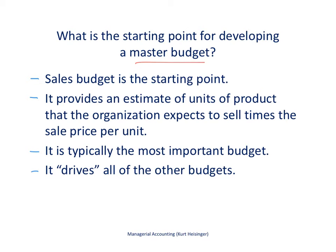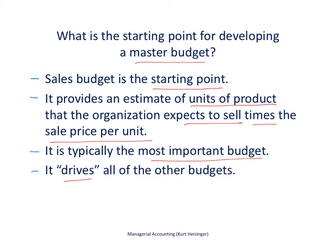The sales budget is typically the starting point for setting up the master budget. It is an estimate of the units of product that we as an organization expect to sell times the sales price per unit. It is typically the most important budget because it drives all of the other budgets — including the production budgets, which are comprised of direct materials, direct labor, and manufacturing overhead. It also drives the selling and administrative budget, the capital expenditures budget, and the cash budget.